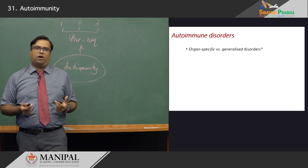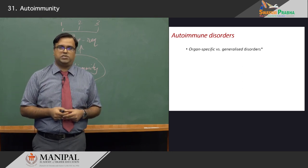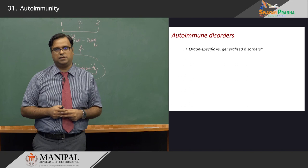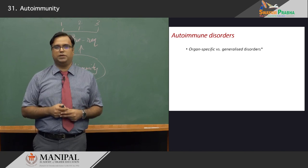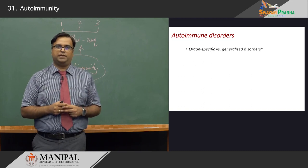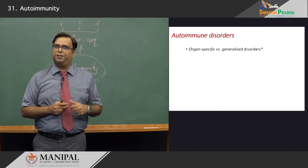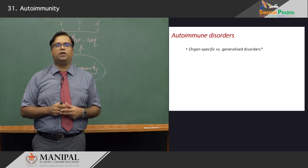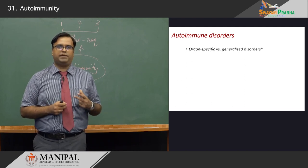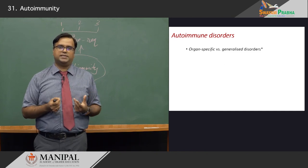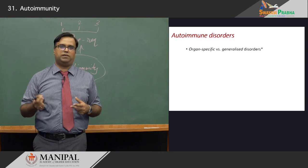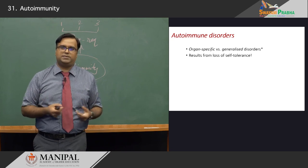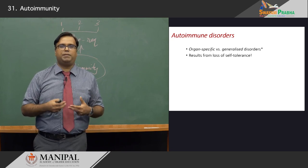Certain disorders of the autoimmune spectrum are organ-specific, such as the thyroid. Some of you may have encountered patients with Hashimoto's thyroiditis or Graves' disease. Type 1 diabetes mellitus — India is the diabetes capital of the world, and you will still see patients with type 1 diabetes mellitus; that also is an autoimmune disorder. You may think of multiple sclerosis, or even closer home, you have a lot of patients of lupus or systemic lupus erythematosus, which we will tackle in the ensuing classes. Some of these are organ-specific; some are generalized or multi-system such as SLE. How do they all come about? Let's try to understand them in a little more detail.